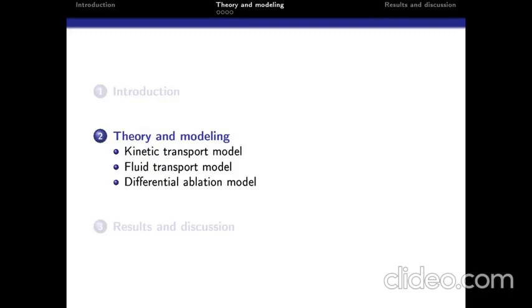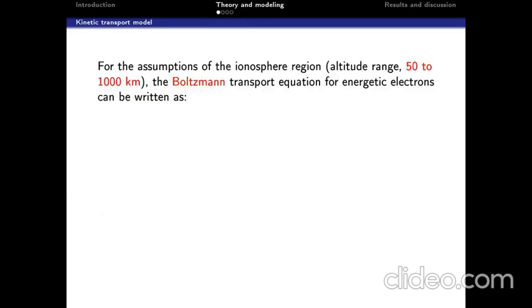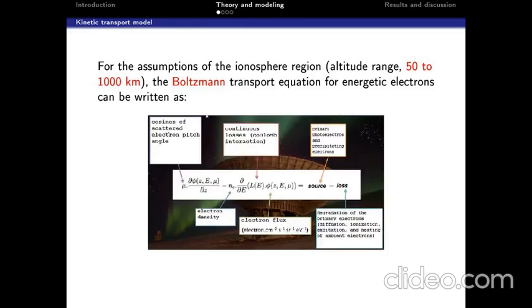It is created during the daytime by the absorption of solar radiation, which tears energetic electrons from the neutral components of the atmosphere. A population of energetic electrons is then created, which in turn is a source of ionization.